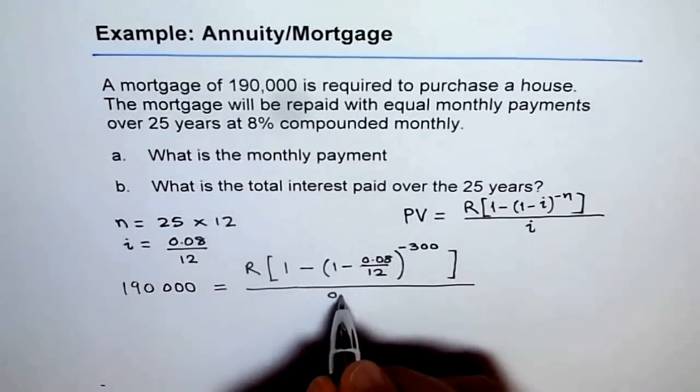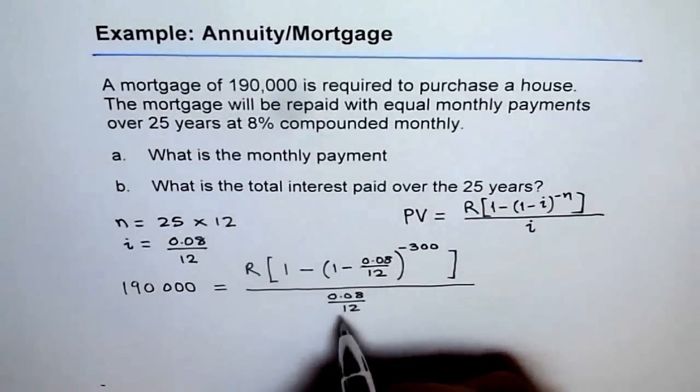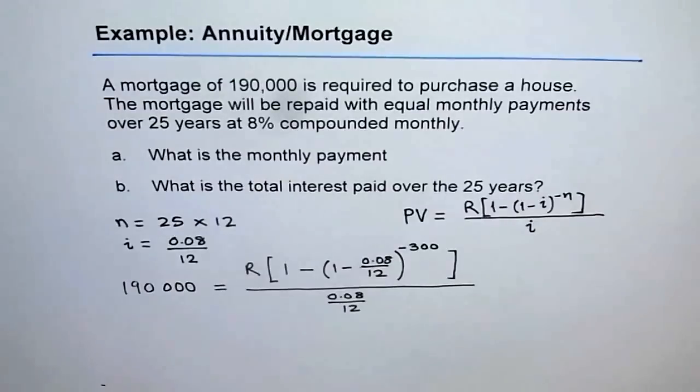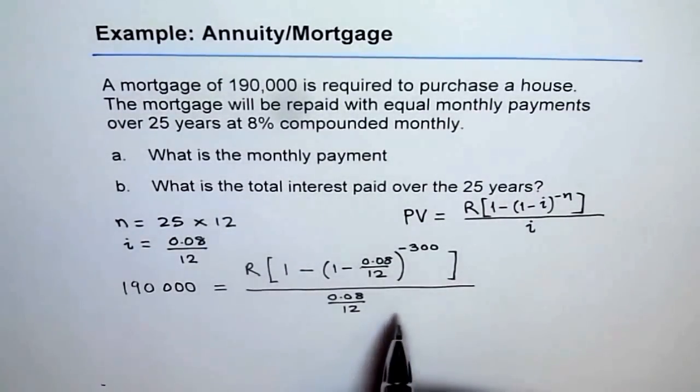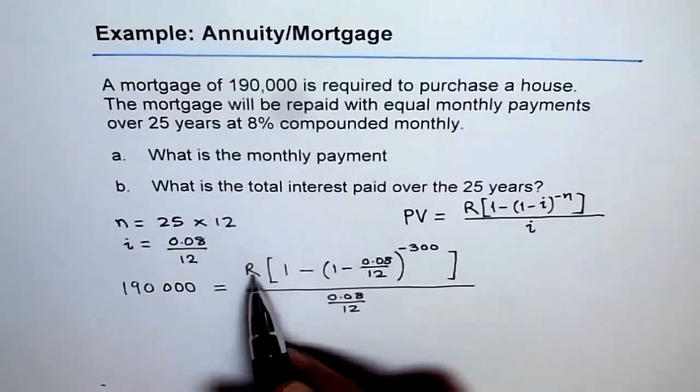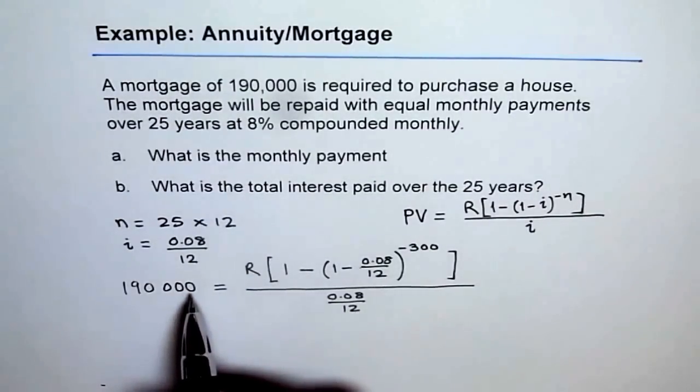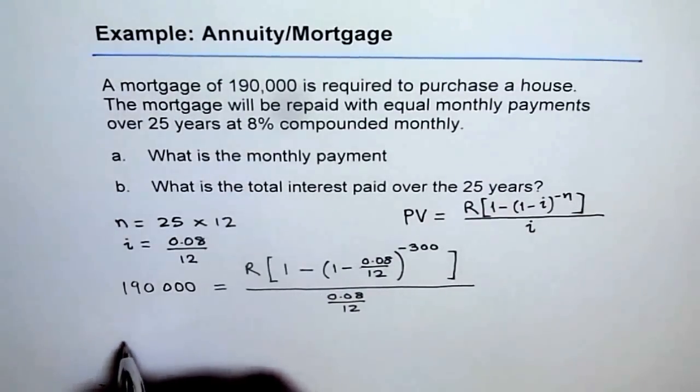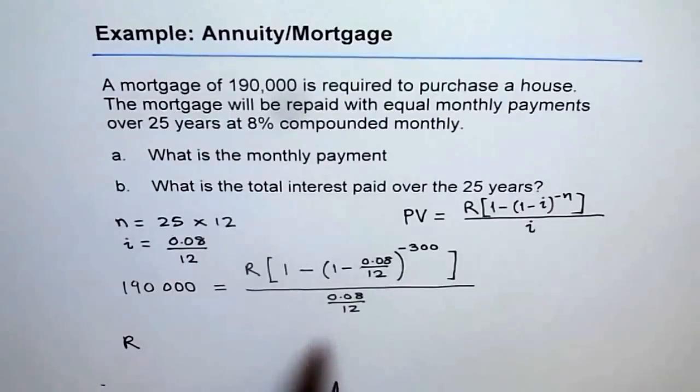I wrote 300 for that. i is 0.08 over 12. I definitely need a calculator. I could simplify this also, but let's forget about it now. So we get all these values plugged in here and from here we can calculate the value of R. What will be R?